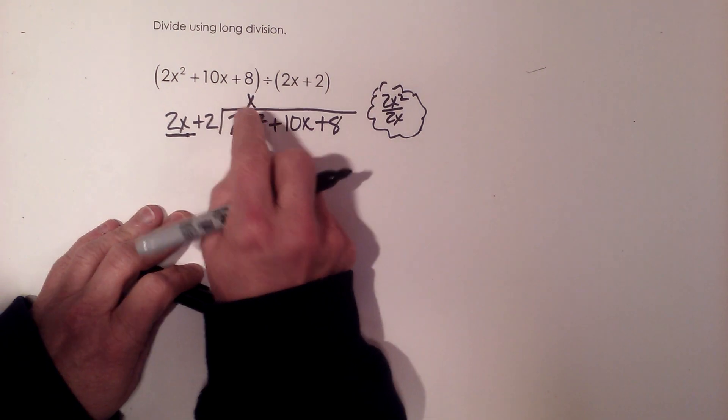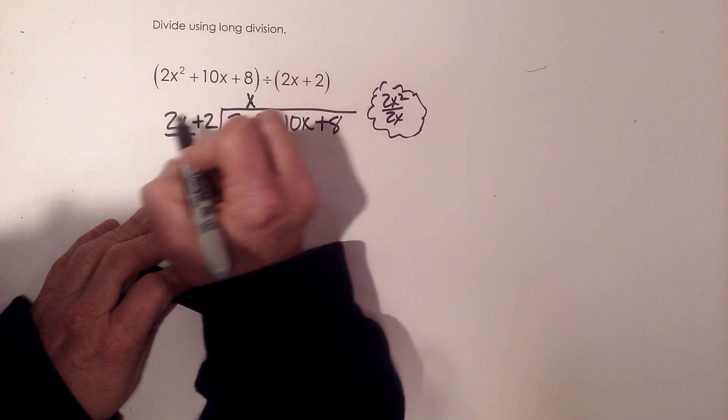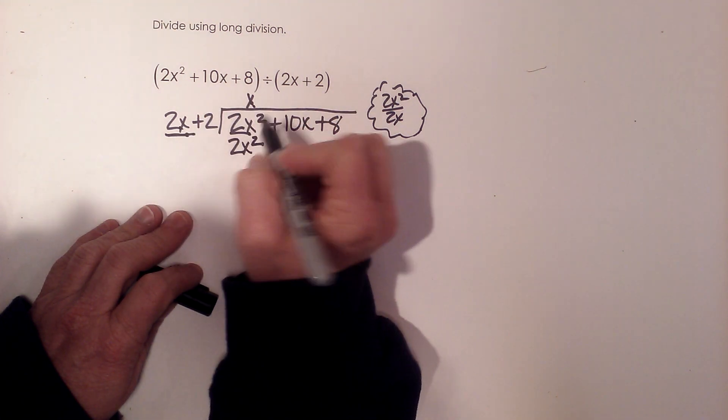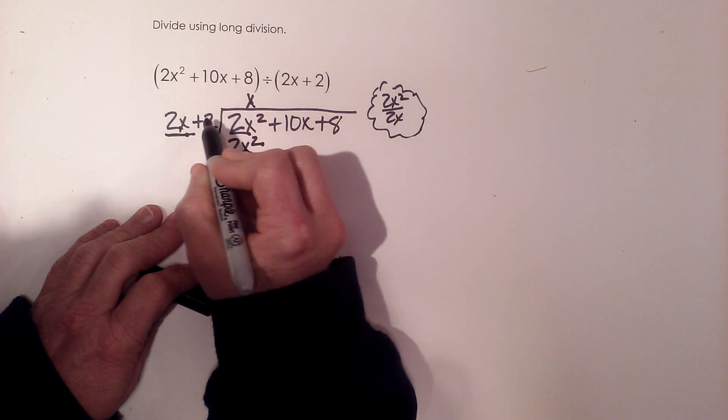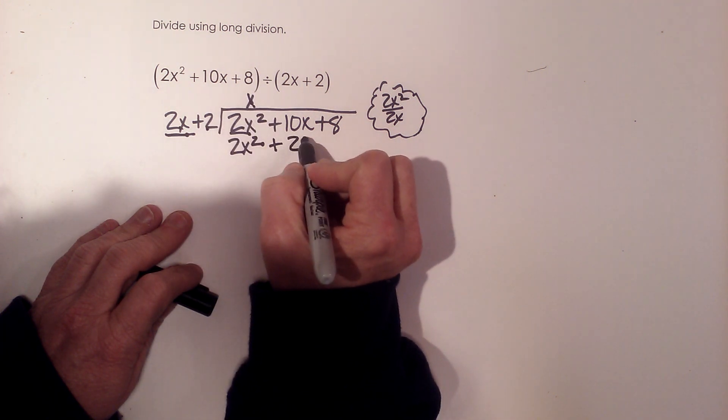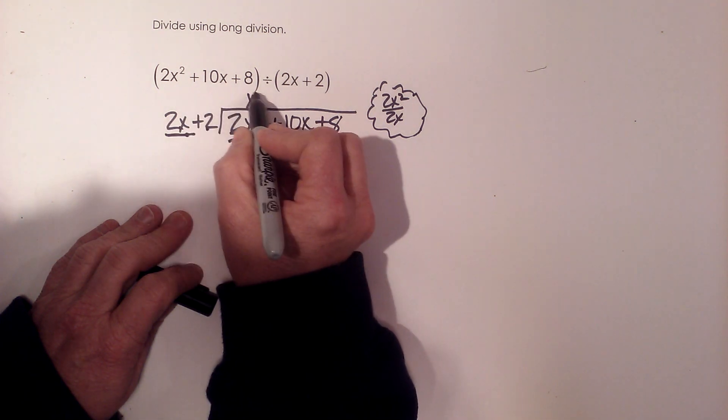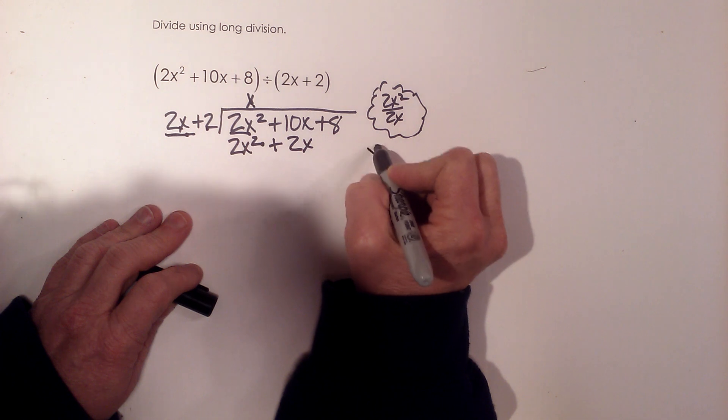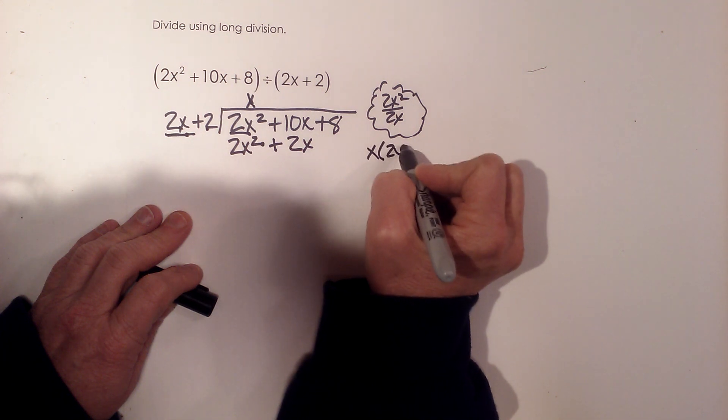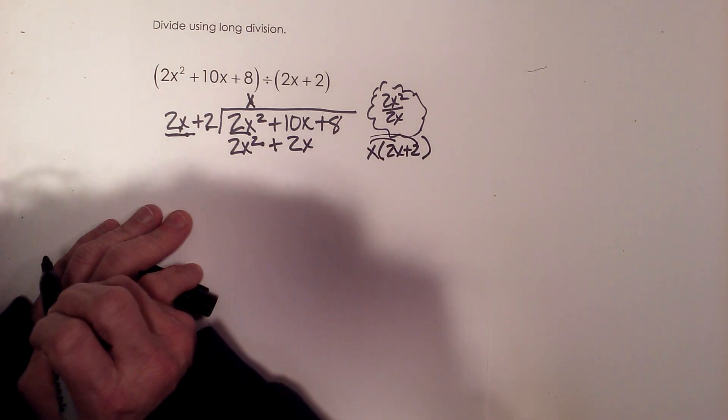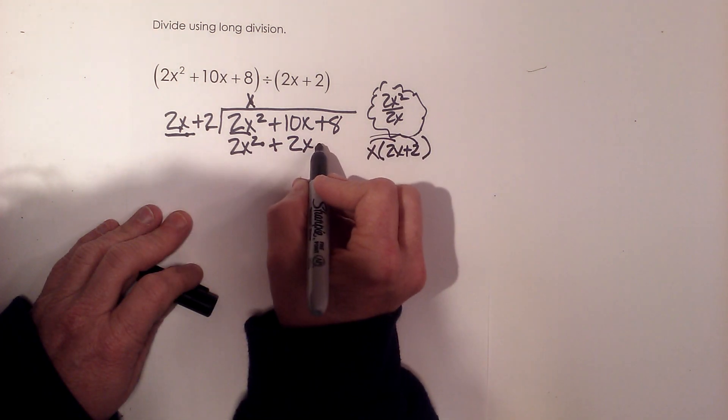So x is my first product. Now I'm going to take x times 2x to get 2x squared. I have to take x times the positive 2 also, and that's going to be positive 2x. So what we're doing is distributing this x into this binomial. I'm going to show that over here so you can see what's happening. We're going to distribute this in, and that's what we write right below it.